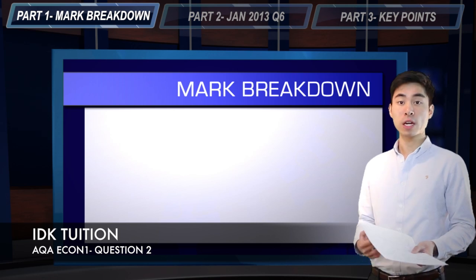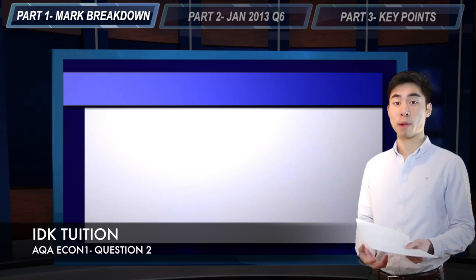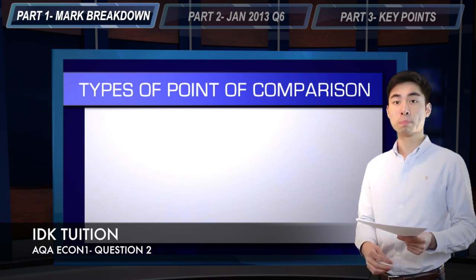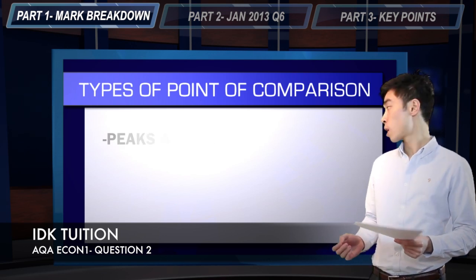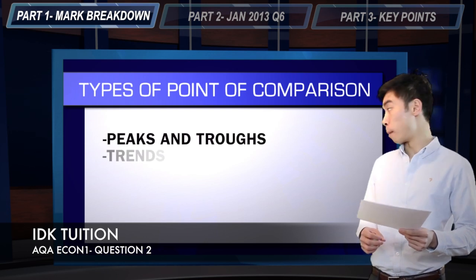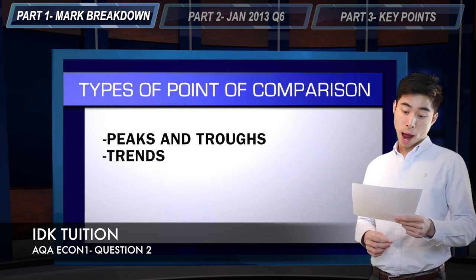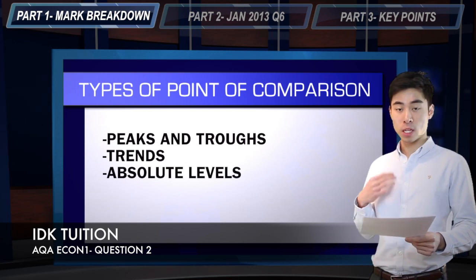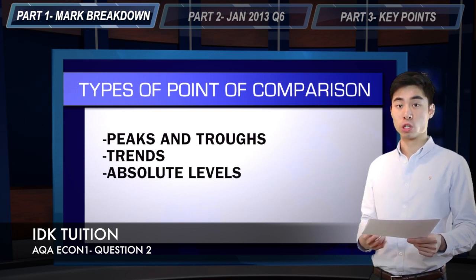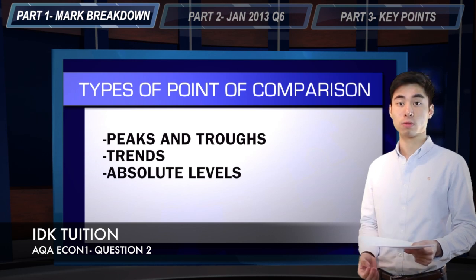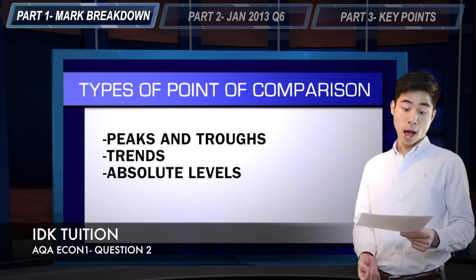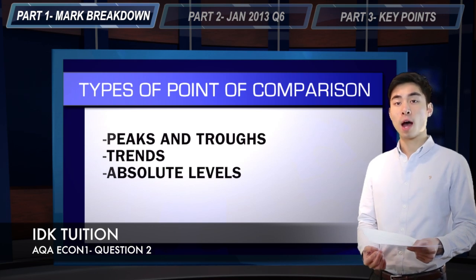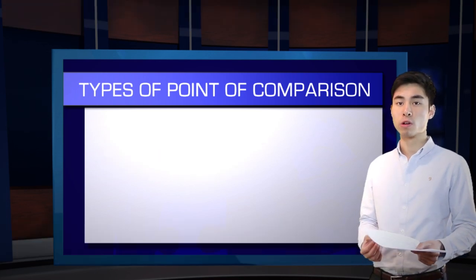There are three different types of points of comparison to think about. The first one is peaks and troughs, the second one is trends, and the third is absolute levels. That's also the order in which you want to look at these — peaks and troughs first, then trends, and then absolute levels as your last choice priority.